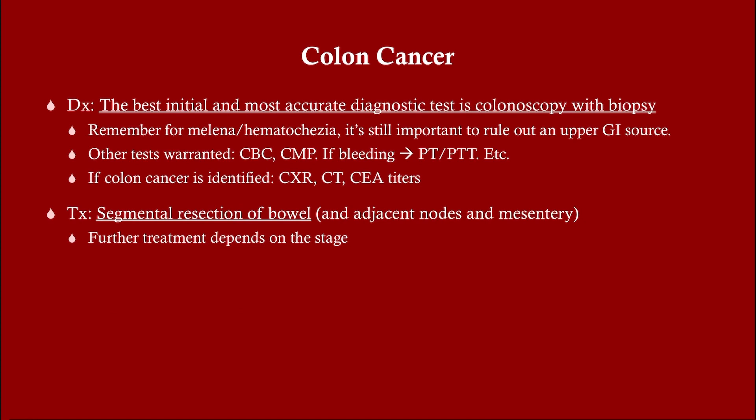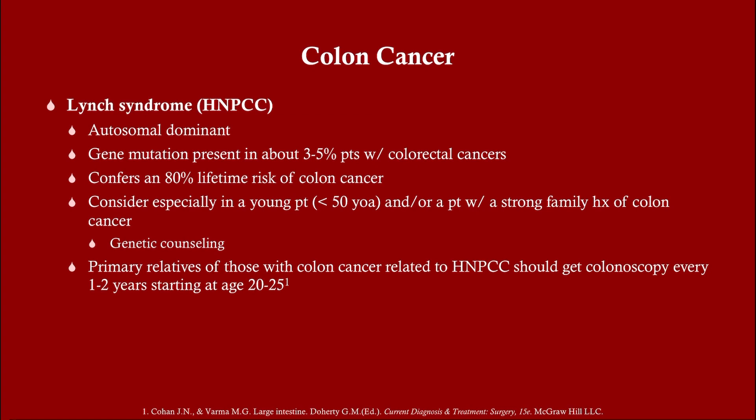The best initial and most accurate diagnostic test is a colonoscopy with biopsy. If they're diagnosed with colon cancer, get a chest x-ray, a CT abdomen looking for mets, and a carcinoembryonic antigen (CEA) titer. Treatment is segmental resection of the bowel along with nodes and mesentery for staging; further treatment including chemotherapy is based on stage. If you find a colon cancer in the sigmoid or descending colon, you still need to do an entire colonoscopy to look for other foci of cancer. Lynch syndrome — hereditary non-polyposis colorectal cancer — raises your risk for colon cancer without causing polyps, and these patients should begin colonoscopies early and be screened more frequently.